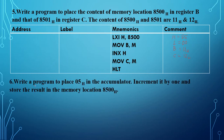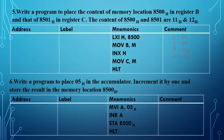Example 6: Write a program to place 05 in the accumulator, increment it by 1, and store the result in memory location 8500. MVI A, 05 loads 05 into the accumulator. INR A increments the accumulator — before execution it is 05, after execution it becomes 06. STA 8500 stores the accumulator content 06 into memory location 8500. Then stop the program.